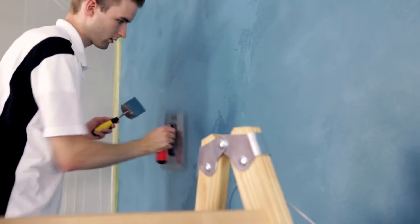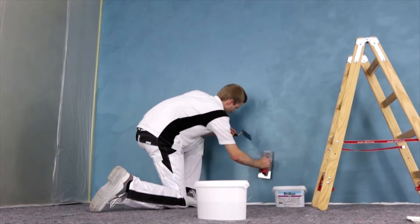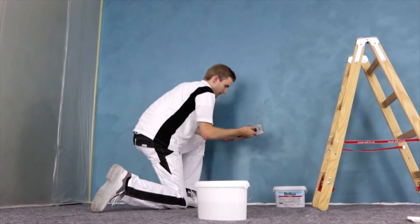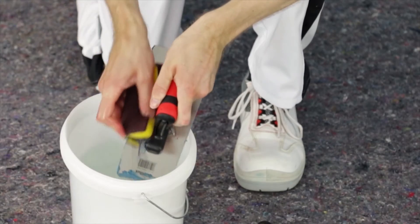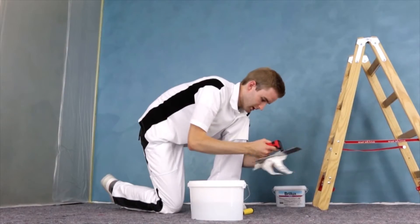The material is then smoothed unsystematically in a criss-cross pattern in the areas immediately after application. When re-smoothing, it's important that the trowel is always kept clean to avoid scoring.